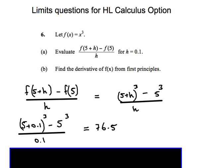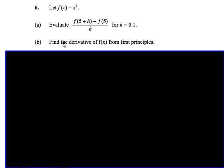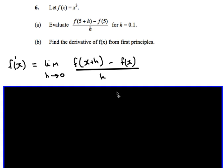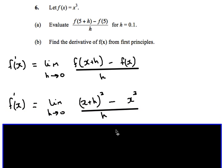The connection with limits should become clear when we look at the second part, because we're going to find the derivative of f of x from first principles. The formula is: the differential of f of x is the limit as h approaches 0 of f of x plus h, take away f of x, all over h. It basically means we see what happens as h gets very, very small.